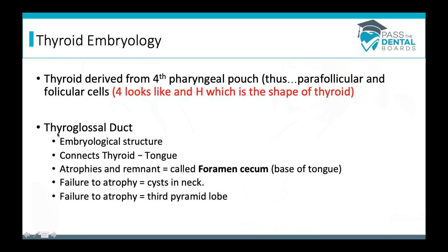An important embryological structure is the thyroglossal duct, which is tested fairly regularly. The name tells you: 'thyro' for thyroid and 'glossal' for tongue, so it connects the thyroid and the tongue. As the embryo develops, this duct eventually atrophies and its remnant is called the foramen cecum, located at the base of the tongue. If it fails to atrophy, it can result in cysts in the neck.